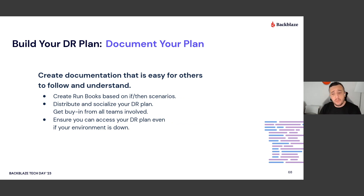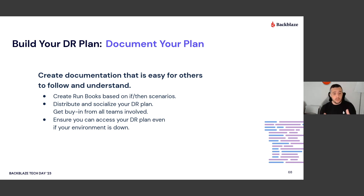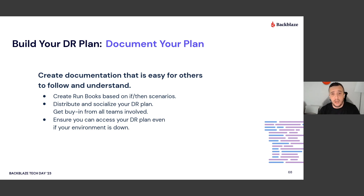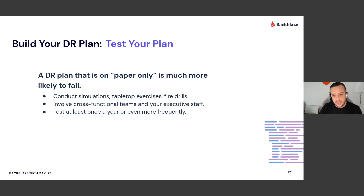Documenting your plan: this should be documented somewhere where everyone involved can see it. You may need runbooks — Backblaze has published Ansible playbooks on our blog as an example. This should be distributed and socialized among your team. If you use internal tools like Confluence or an internal wiki, everything should be there so those involved have easy access. Make sure you can access the plan even if your environment is down — that's one benefit of using something like Confluence, which isn't hosted in your internal system, so if those go down you can still access it.